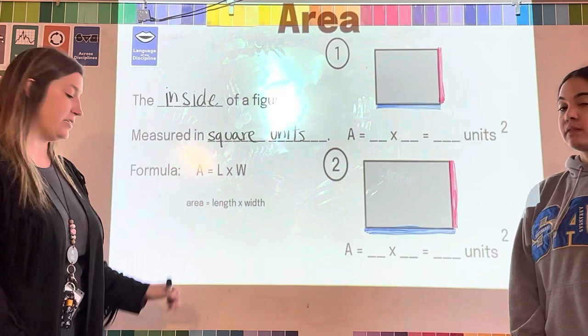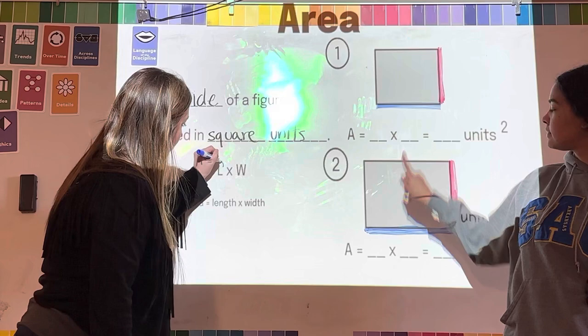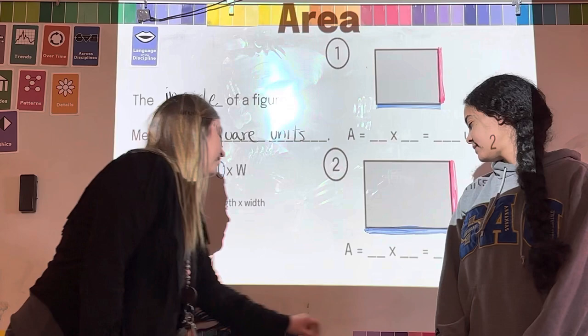Our formula for area is A equals L times W. So A obviously stands for area, L stands for our length. If you look at the notes, we're color coding it blue for our length for all of our shapes, and then W stands for width and we're color coding that red for both of our shapes.